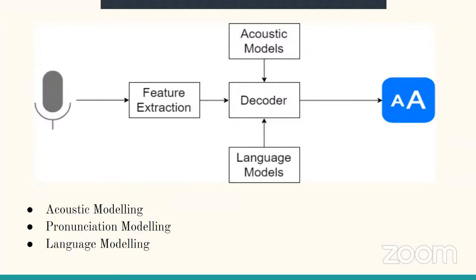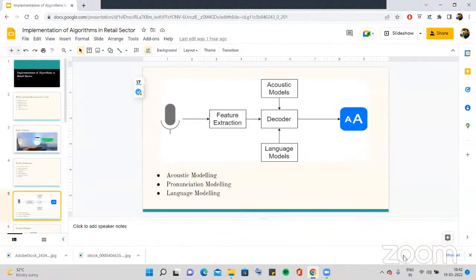I'd like you to make a note of acoustic modeling, pronunciation modeling, and language modeling. You can read further, but just to understand where they are actually being used — they are used in smart assistants, but the main and most prominent example you can think of is Alexa. Alexa tries to capture all of these models. Consider this mic as an Alexa device — you give it a voice command like 'switch off the lights,' and it tries to extract those features like 'light' and 'off.'